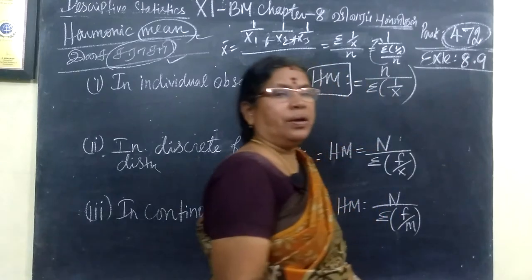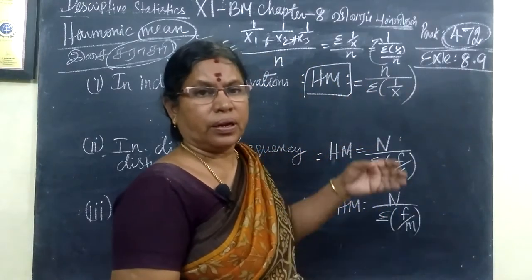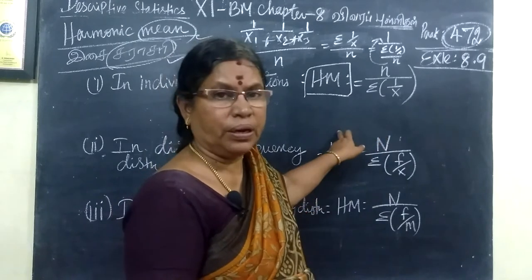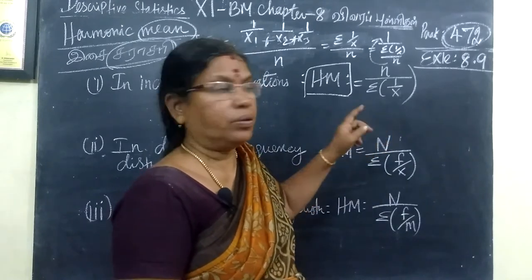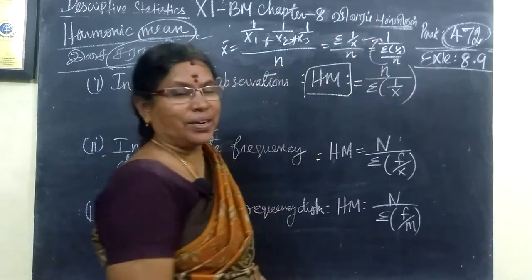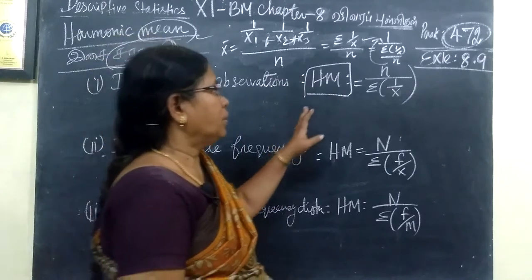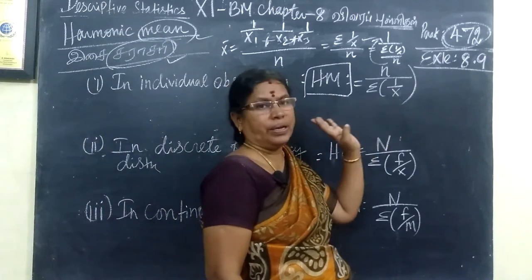So harmonic mean means the reciprocal of the arithmetic mean. How does the reciprocal value exist? You just leave it. Harmonic mean is n by sigma of 1 by x.